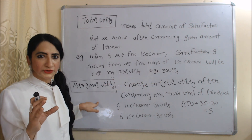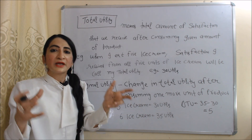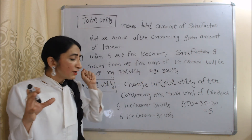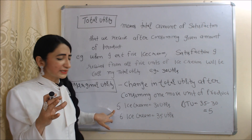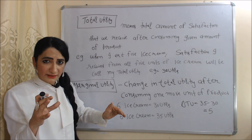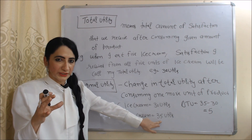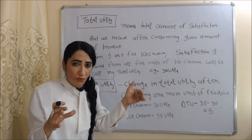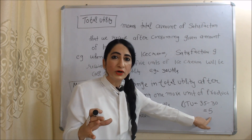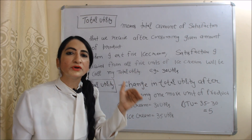What is marginal utility? Marginal utility means change in total utility after consuming one more unit of product. For example, when I was eating 5 ice creams my total utility was equal to 30 utils. But as I increase to one more unit — now eating 6 ice creams — my total utility is equal to 35 utils. So change in total utility after consuming one more unit is 35 minus 30, equal to 5. This 5 will be called my marginal utility.